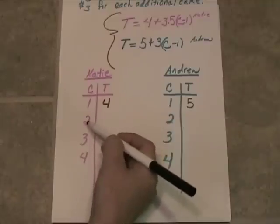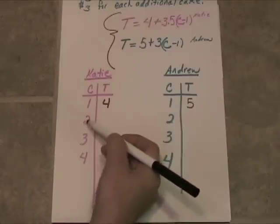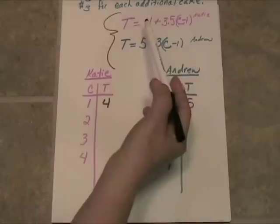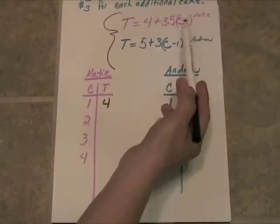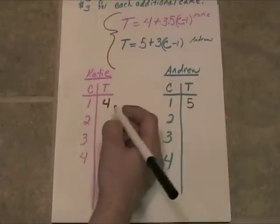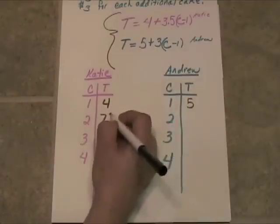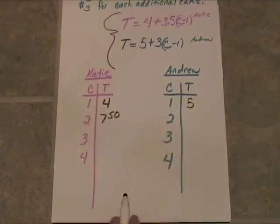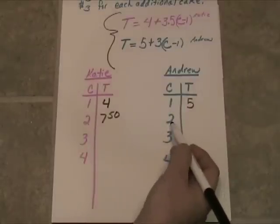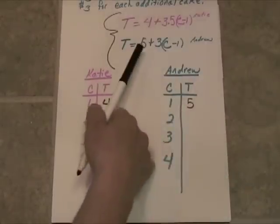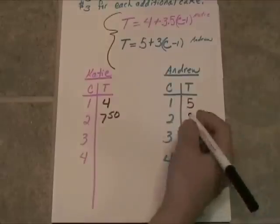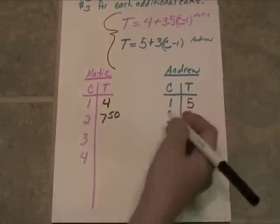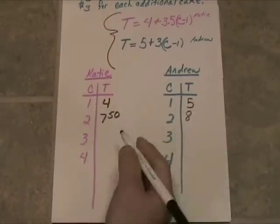Now, if she sells two cakes, that'll be one cake at $4, plus two minus one, one cake at $3.50, so she's bringing in $7.50. Now, if Andrew sells two cakes, the first one will be sold at $5, and the second one will be sold at $3, so he's bringing in $8.00. So he's still more expensive for the first two cakes.